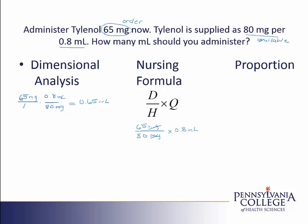I'll put these numbers on my calculator, and again I come up with an answer of 0.65 ml, which does not need to be rounded because this amount less than 1 ml can be measured in the TB syringe.